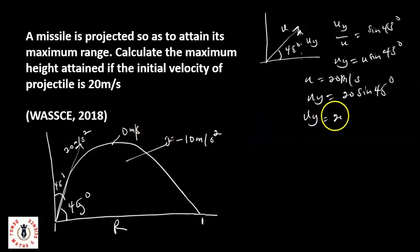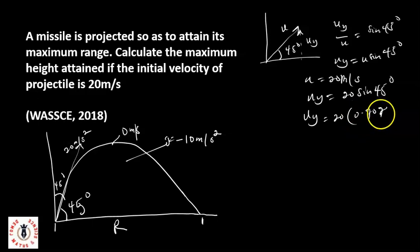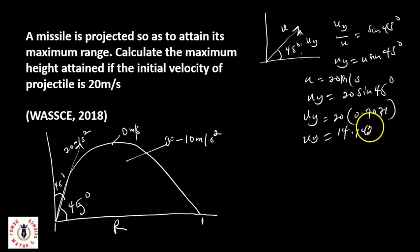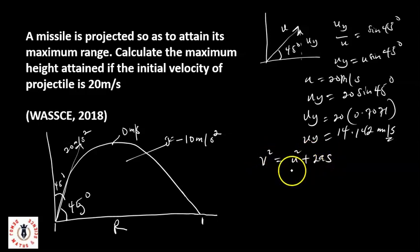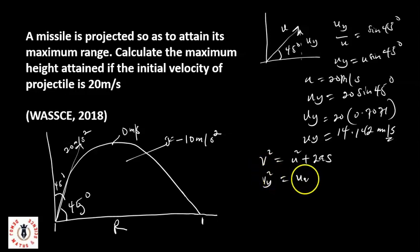Sine 45 degrees is 0.7071, so u_y equals 20 times 0.7071, which gives us 14.142 meters per second. Now, with u_y equal to 14.142, we'll use the formula v squared equals u squared plus 2as to solve for the maximum height. We're interested in the vertical direction, so v_y squared equals u_y squared plus 2 times a times s.